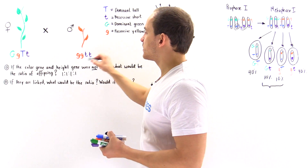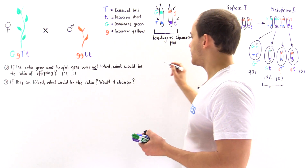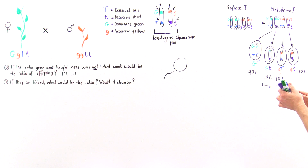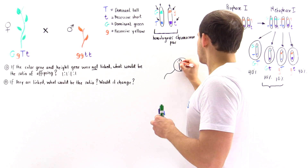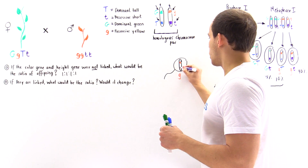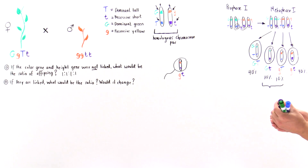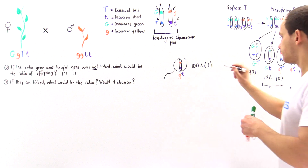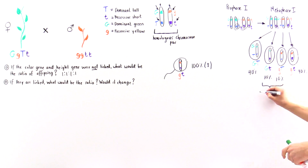For the male individual, because all alleles are recessive, there is only one type of gamete — a sperm cell carrying lowercase g and lowercase t. When crossing over takes place in this individual, nothing changes because the chromatids are identical. So this gamete occurs 100% of the time, giving a likelihood of 1.